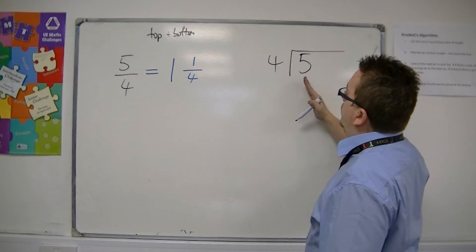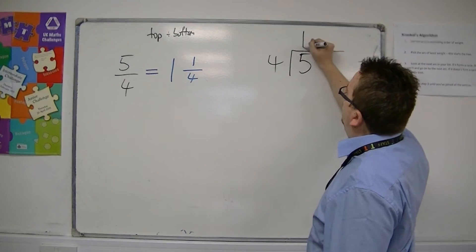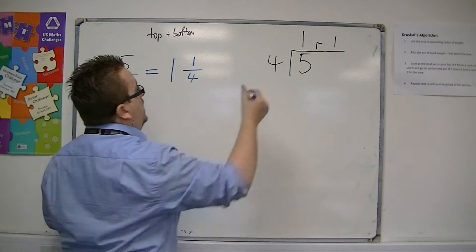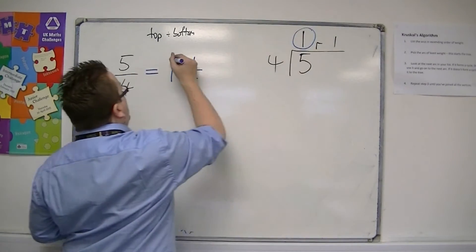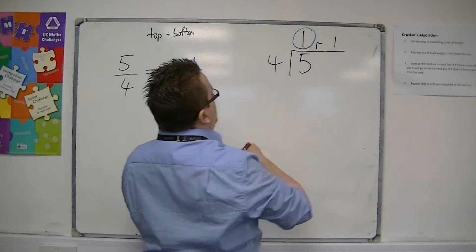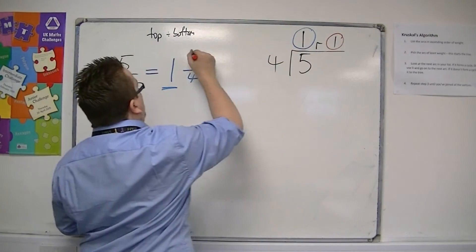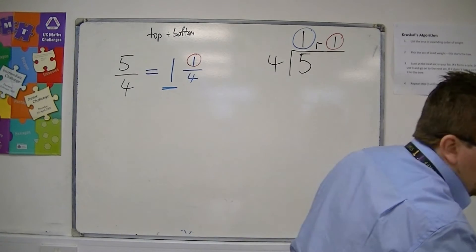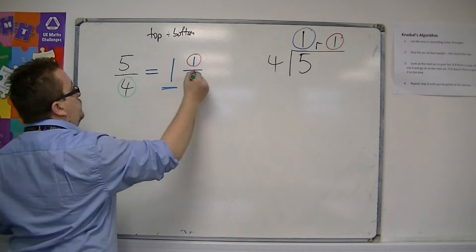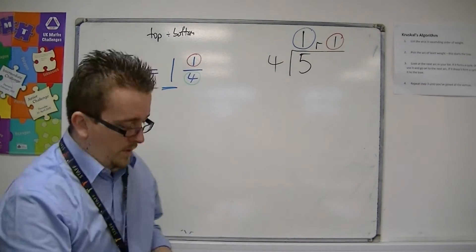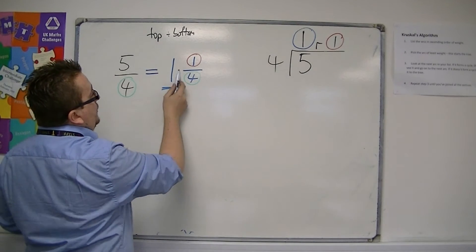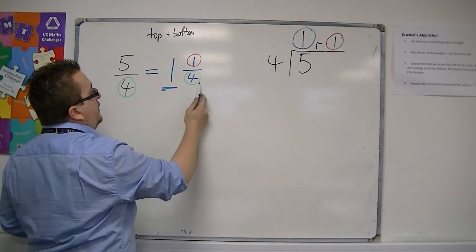4s into 5 go once, remainder 1. So this 1 is this 1 here, the large 1 here. The remainder goes here, and the denominator remains the same. And this is called a mixed number, because it is a mix of a whole number and a fraction.